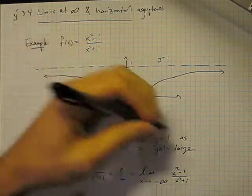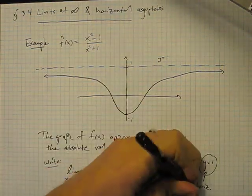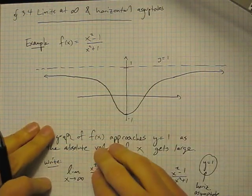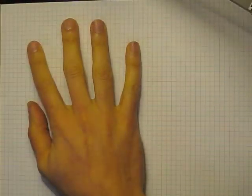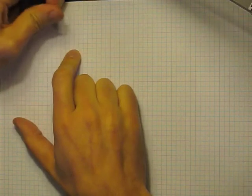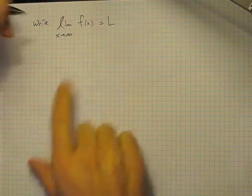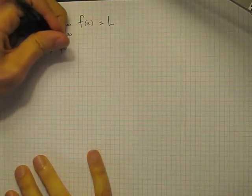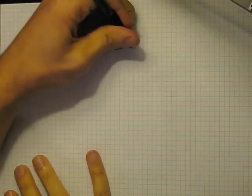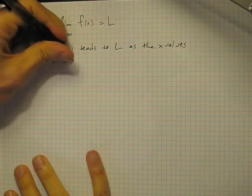And this line here, y equals 1, is called a horizontal asymptote. That's really all there is to this section if you understand that. Let's just draw some pictures. So we write the limit of a function f as x goes to infinity is equal to L, if f of x tends to L as the x values become larger and larger.